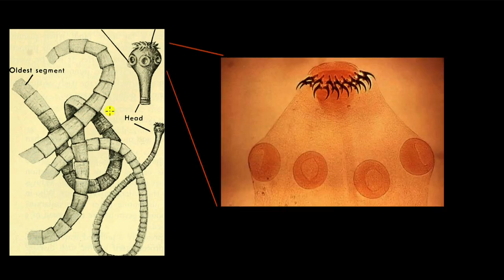So this is the tapeworm and this is its head magnified. The head is magnified here and we are going to magnify the head even further. So this is the top part of the head here and these structures are the specialized structures because they are parasites.